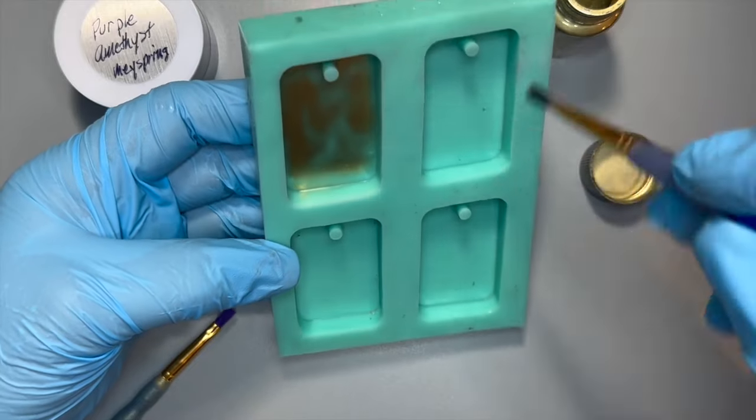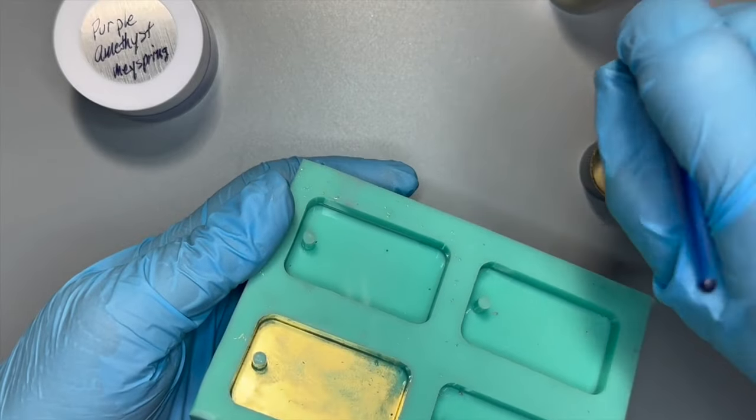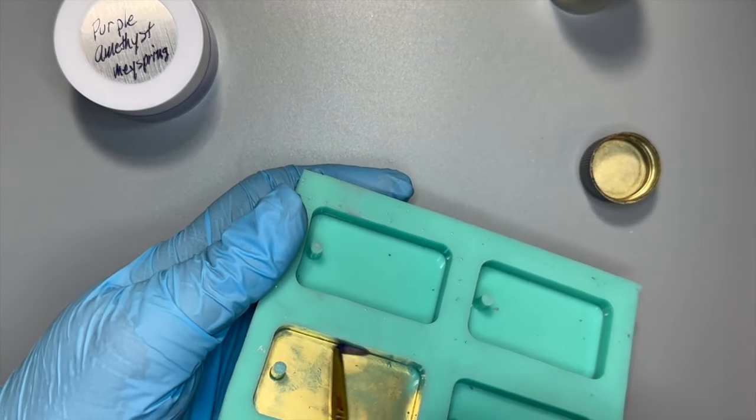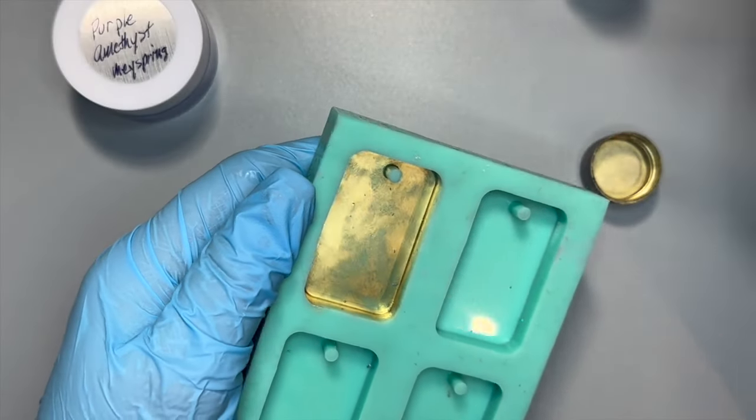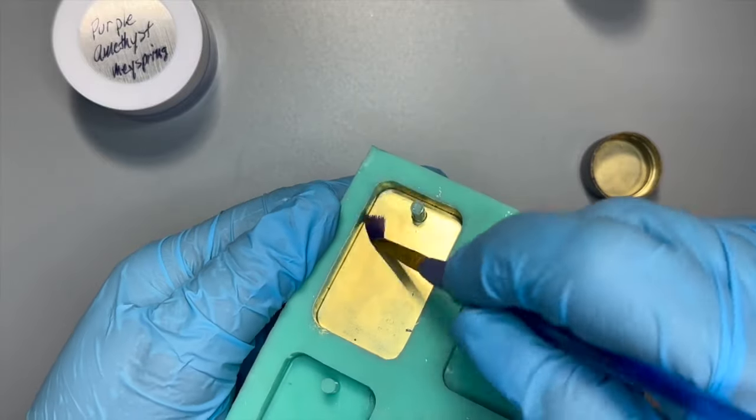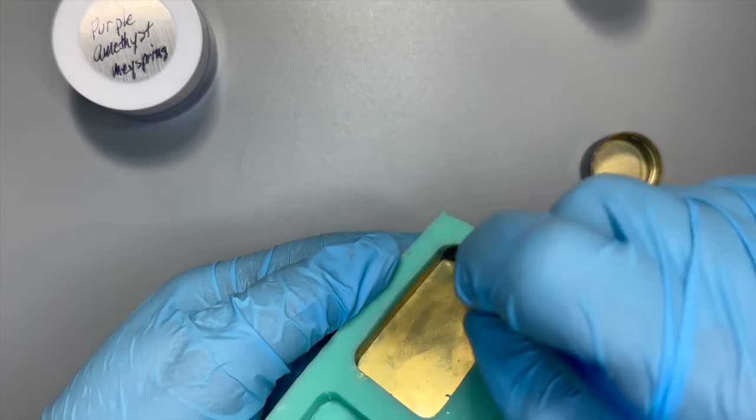I was trying to be frugal here by using the cap and it took me forever to paint the back and sides of this first pendant. When I start using the inside of the bottle, it goes a lot faster. This is about 15 minutes of footage I just cut down.